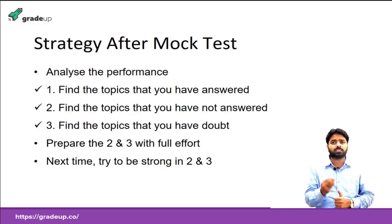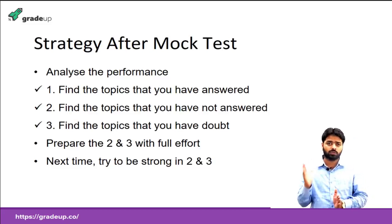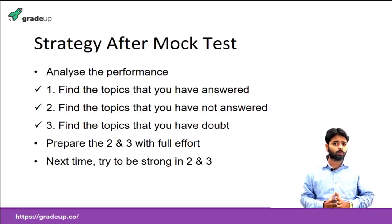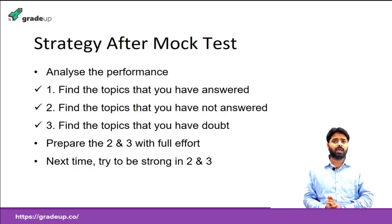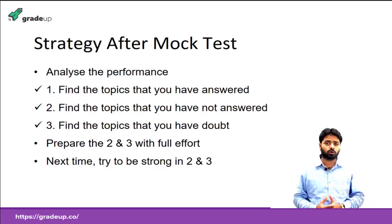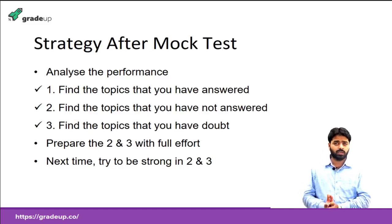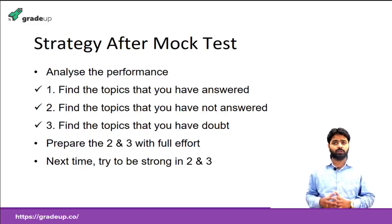There are three things to identify. First, find the topics you answered correctly — you have no problem with those and you are comfortable with them. Second, find the topics you did not answer — you are not comfortable with those, and you must understand what the problem is. Third, find the topics where you had doubt.